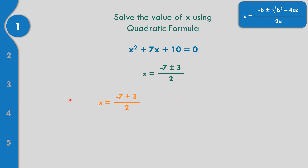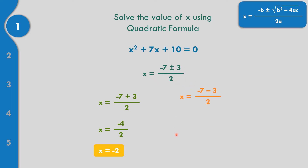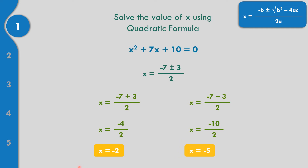The first value of X: negative 7 plus 3 all over 2. That gives negative 4 divided by 2, which equals negative 2. For the second solution, X equals negative 7 minus 3, all over 2. Negative 7 minus 3 equals negative 10, divided by 2, that equals negative 5. So the solutions are negative 2 and negative 5.